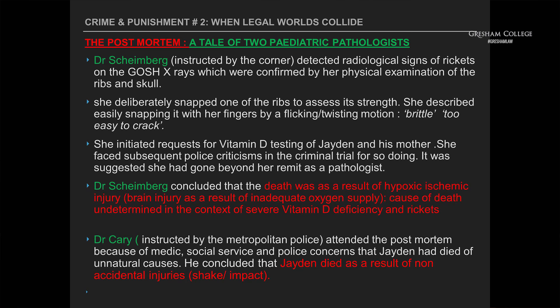The post-mortem — this is the really tricky stage where a living child becomes a combination of blood, bone and muscle and the medics try to understand what happened. A tale of two paediatric pathologists: Dr Scheinberg was instructed by the coroner. She looked at the X-rays taken by Great Ormond Street and, unlike the radiologists there, she detected radiological signs of rickets — confirmed by her physical examination of the ribs and skull. She snapped the ribs — a standard test to see how strong the bones are — and described them as too brittle, too easy to snap. This confirmed what she had seen in the X-rays. She initiated a request for vitamin D testing of Jaden and his mother, and faced subsequent criticism from the police authorities for doing so.